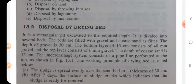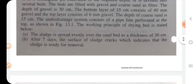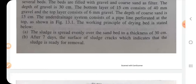Disposal by drying bed: it is a rectangular bed excavated to the required depth, divided into several beds filled with gravel and coarse sand as filter. The depth of gravel is 300 mm — the bottom layer is 150 mm of 40 mm gravel, and the top layer consists of 6 mm gravel. The depth of coarse sand is 15 cm. The under-drainage system consists of a perforated pipeline at the top.